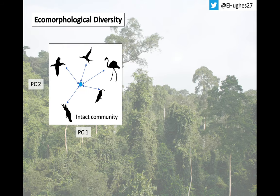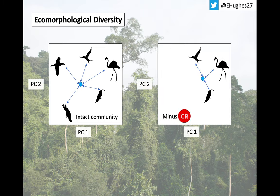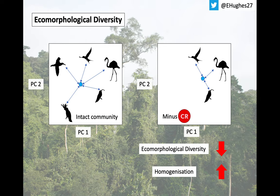The trait data were used to calculate a score of ecomorphological diversity. To do this, we ran a principal components analysis and calculated the mean distance to centroid for the morphospace. This is depicted simply here on the left, where you have an intact community of five species. The mean distance to centroid is the average distance between each species and the central point. We then drop each IUCN category in turn and calculate the mean distance to centroid — here, we have dropped two critically endangered species. Homogenisation occurs where mean distance to centroid decreases, as we find here.